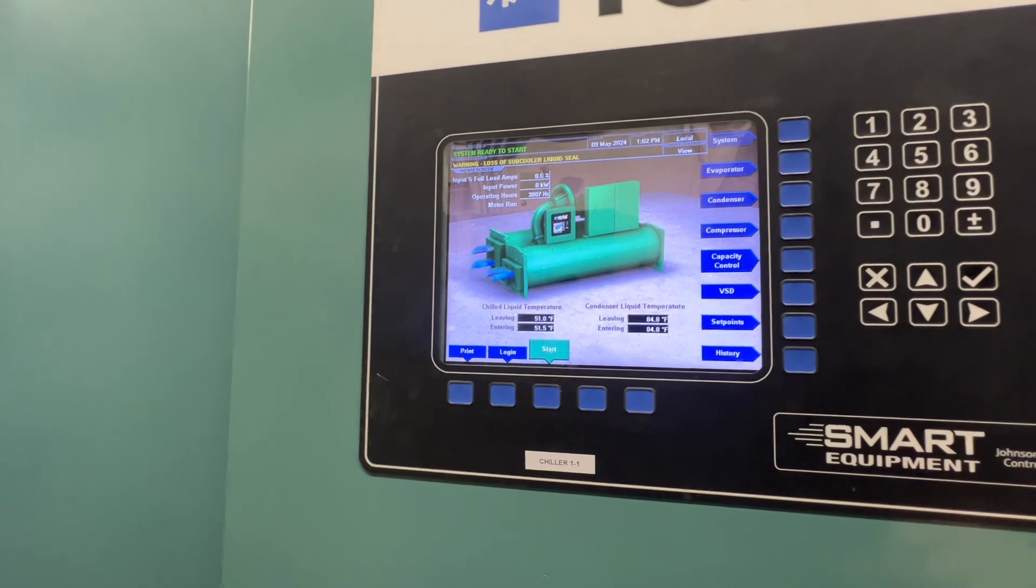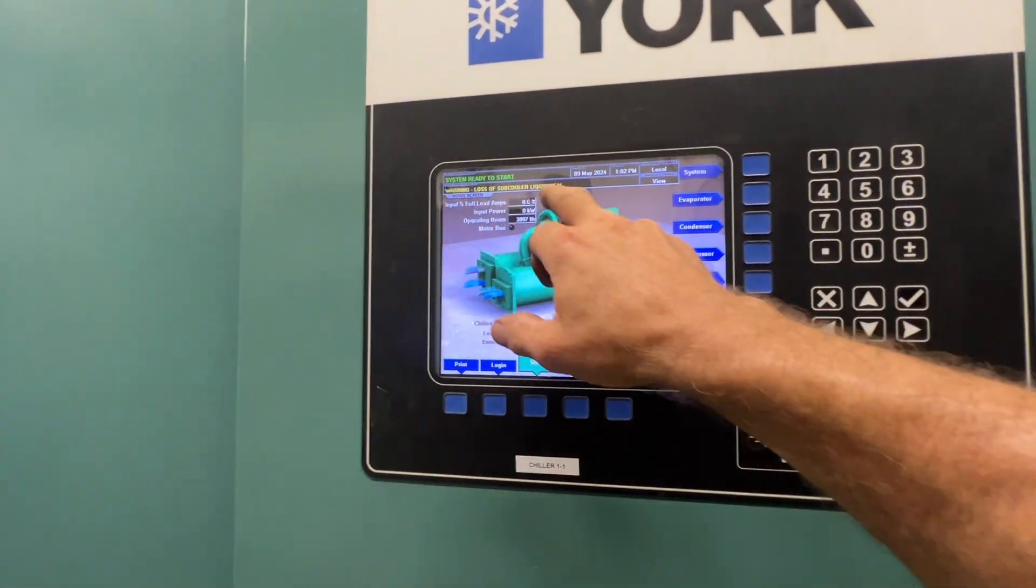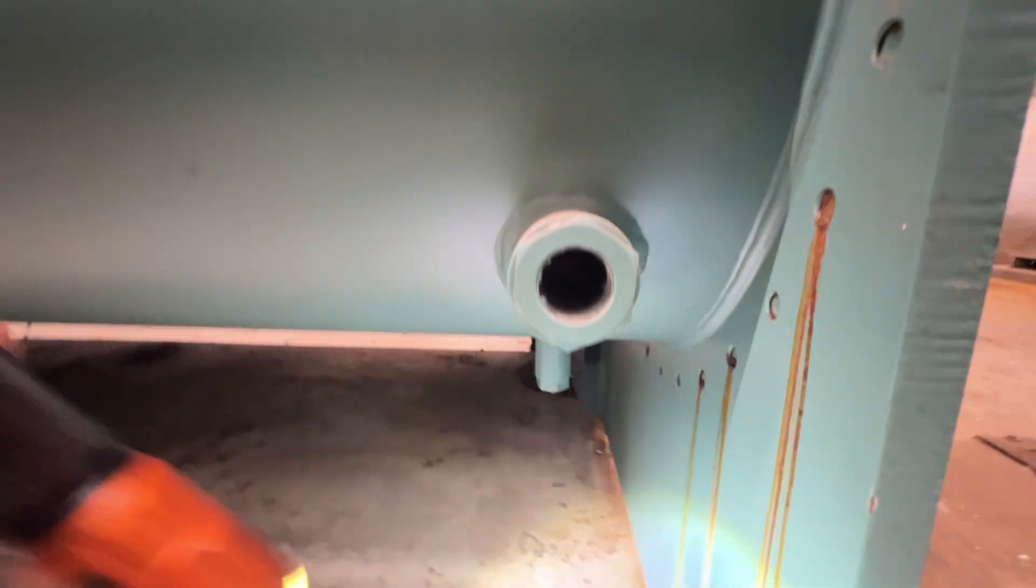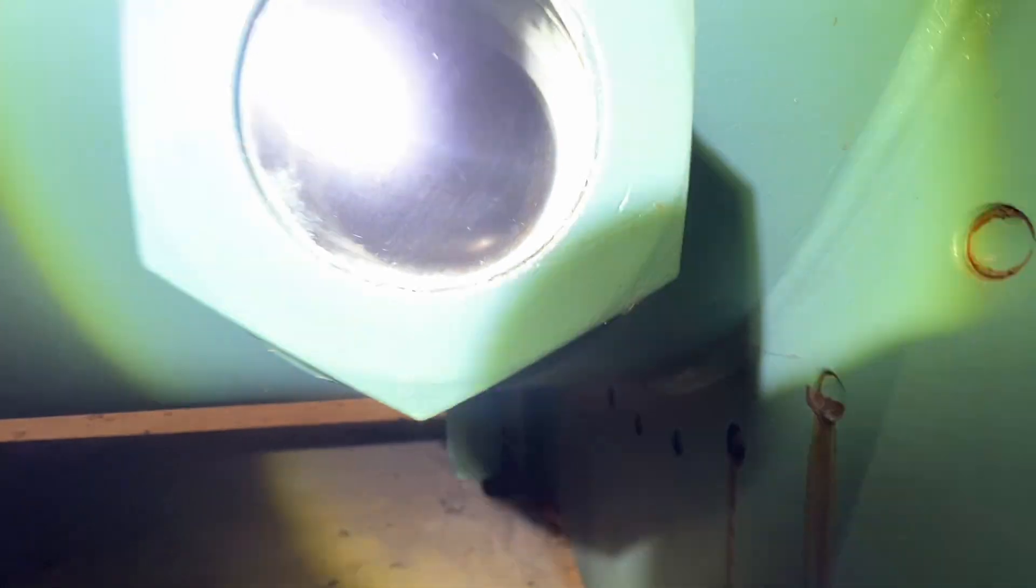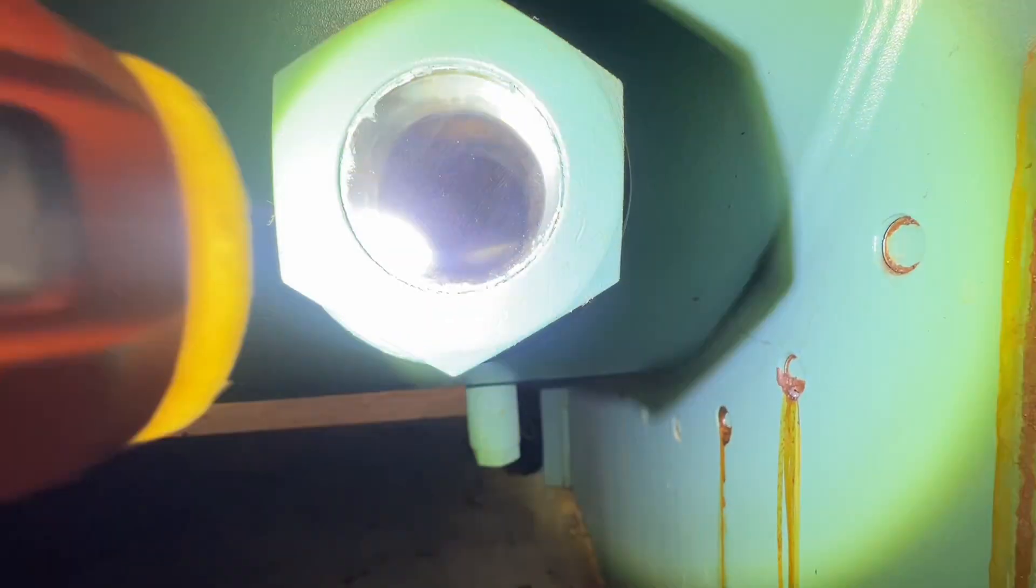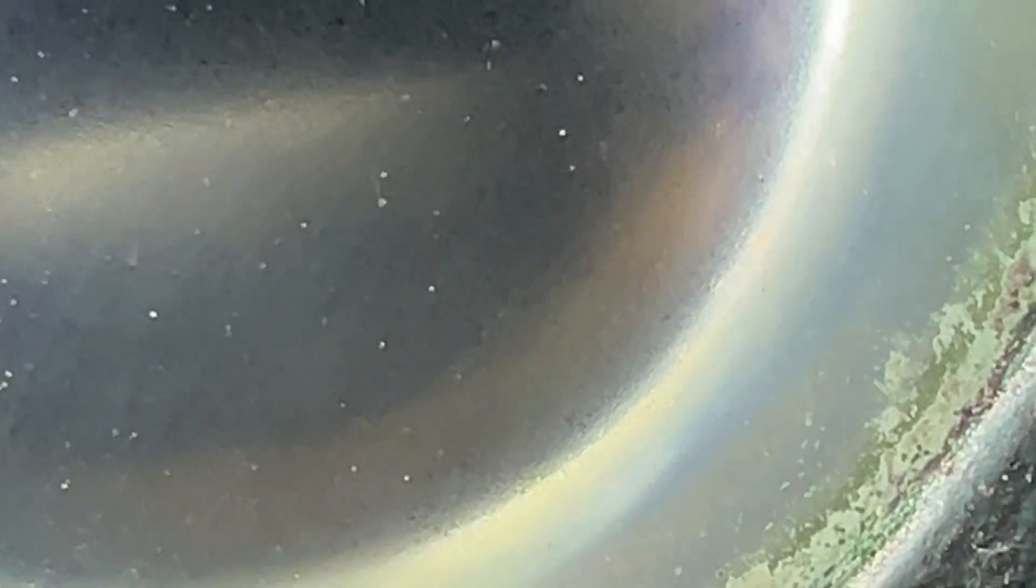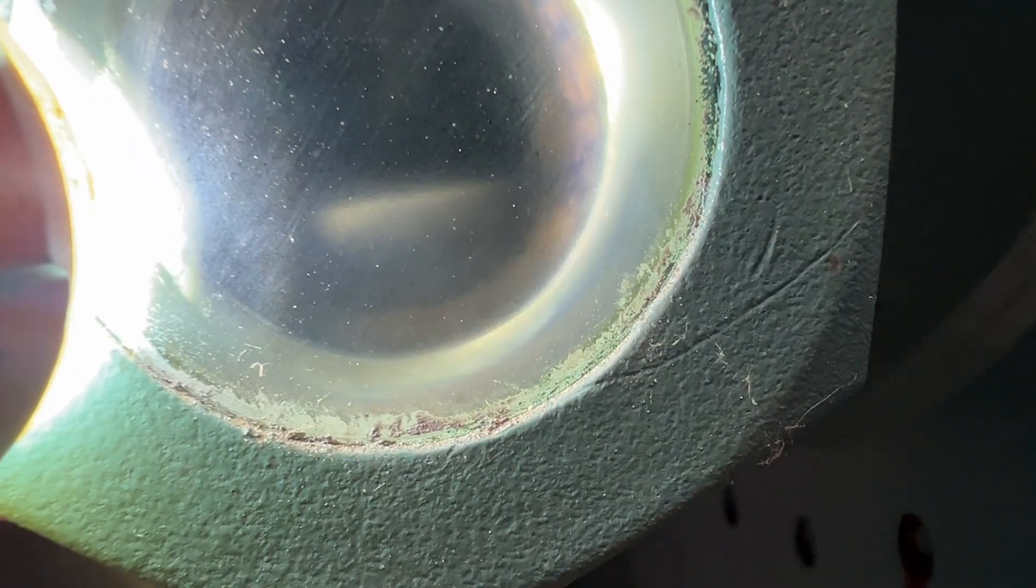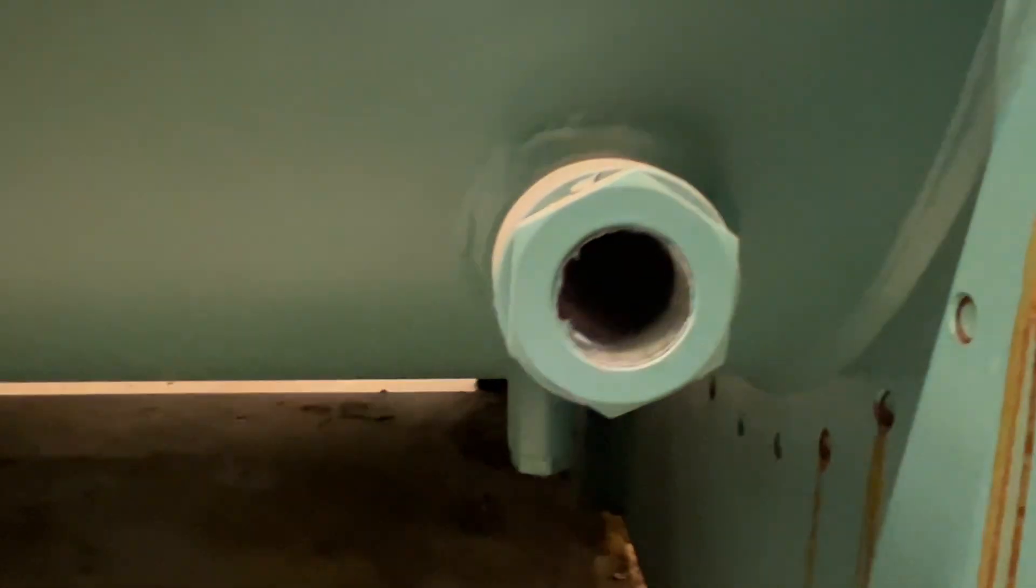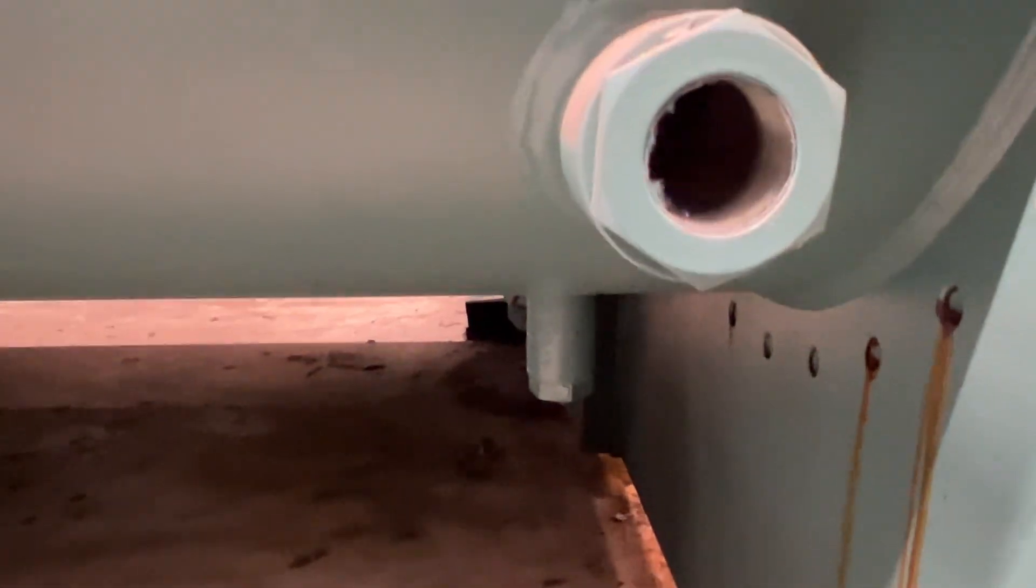I went ahead and shut chiller one off. It was surging anyways, loss of subcooler liquid seal. We don't have obviously enough refrigerant. It's not running right now but you can see how it is. You can barely see that subcooler in there. With that running, that should be covered up almost an inch above that. We definitely didn't have that.